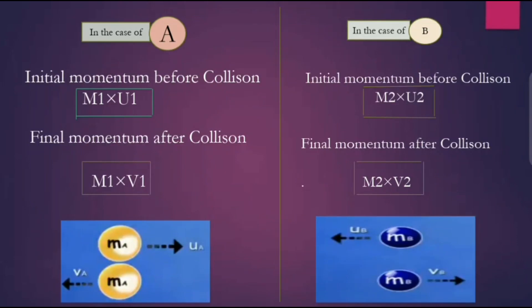From this, we came to know that in the case of ball A, initial momentum before collision will be m1 into u1, final momentum after collision will be m1 into v1. In the case of ball B, initial momentum before collision will be m2 into v2.